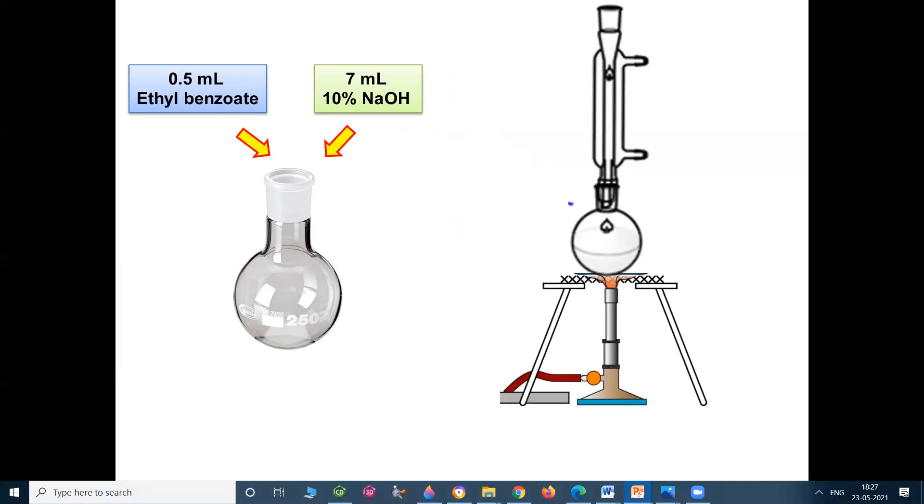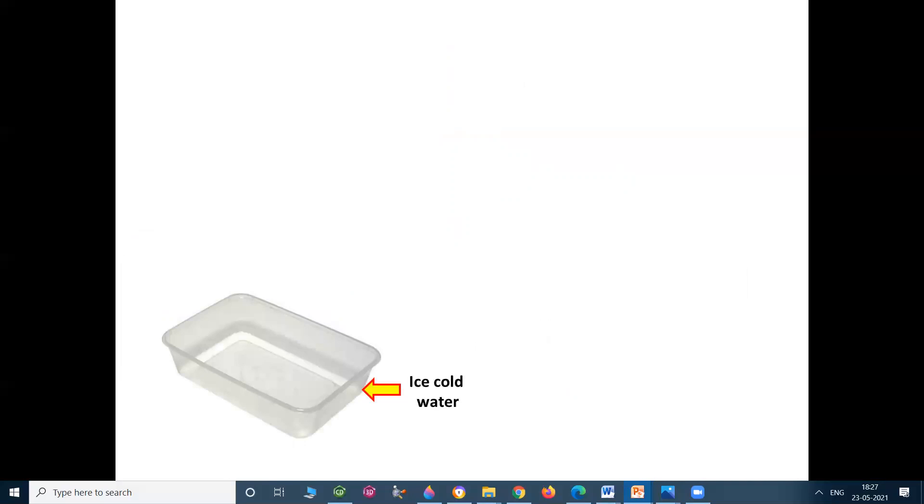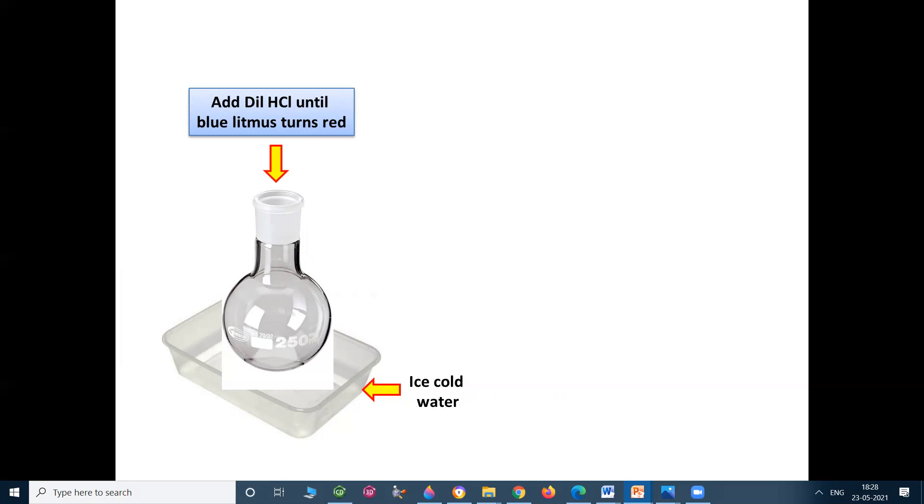Then reflux the solution until ethyl benzoate layer disappears. Then place the round bottom flask in ice cold water and add dilute HCl until blue litmus turns to red.